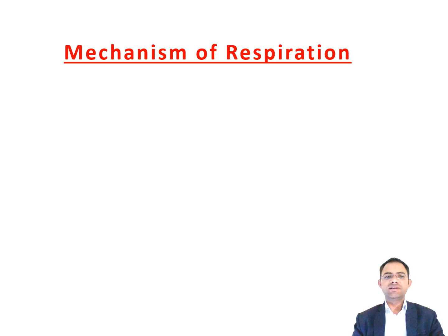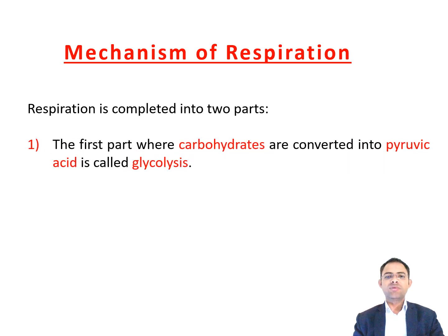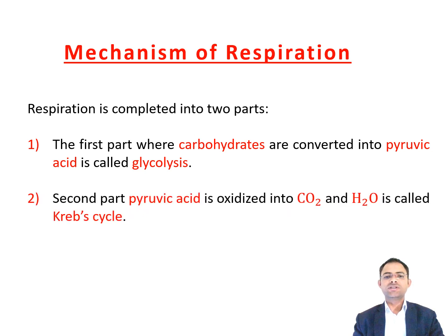Now the mechanism of respiration. The process of respiration is completed in two parts. In the first part, carbohydrates are converted into pyruvic acid — that is called glycolysis — and in the second part, pyruvic acid is oxidized into carbon dioxide and water, which is called the Krebs cycle. In aerobic and anaerobic respiration, the formation of pyruvic acid from carbohydrates through glycolysis is the same and common. But the fate of pyruvic acid depends upon the presence or absence of oxygen. In the presence of oxygen, pyruvic acid is oxidized into carbon dioxide and water, whereas in the absence of oxygen, pyruvic acid is oxidized into carbon dioxide and alcohol.